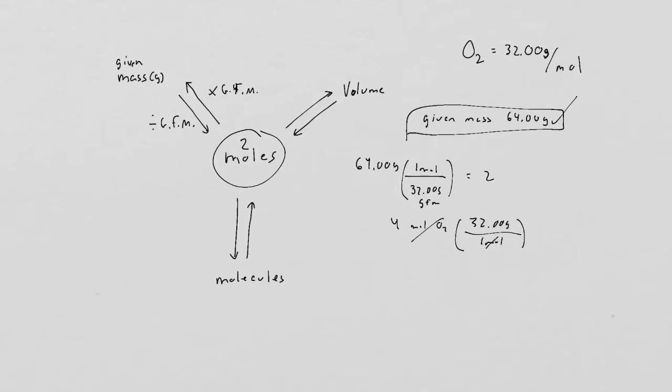So if I had four moles, I would get whatever four times 32 is. That's the point I'm trying to make. Okay, so how would we get from our number of moles to volume or molecules and back?